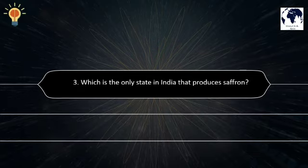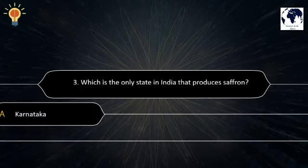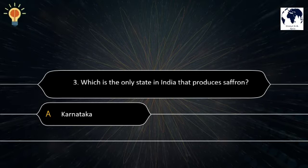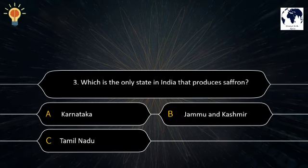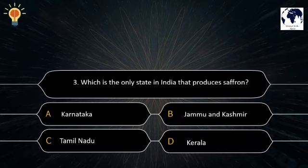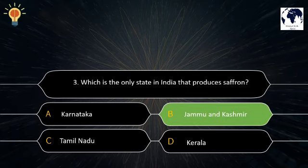Question number 3. Which is the only state in India that produces saffron? Option A: Karnataka. Option B: Jammu and Kashmir. Option C: Tamil Nadu. Option D: Kerala. The correct answer is Option B — Jammu and Kashmir.